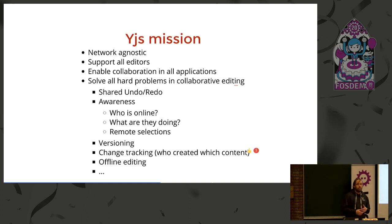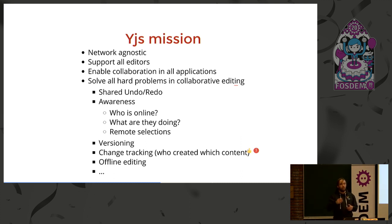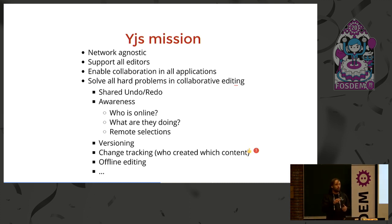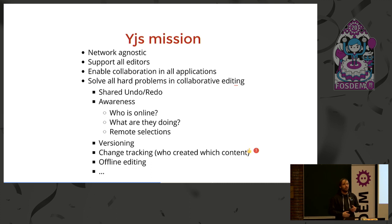YJS also solves the problem of propagating awareness information — for example, who is currently online, what are they currently selecting in the text, where is their cursor, what is their name. YJS has many more features: it does versioning, change tracking, you can track who created which content — very much like git blame. You can select a portion of text and find out who created it. It also handles offline editing really well, with all the problems associated with merging offline content.